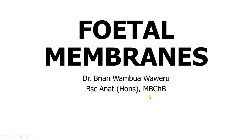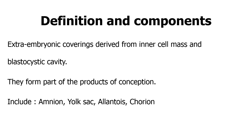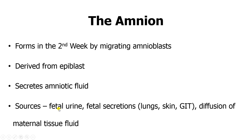Welcome back to my channel. Today we will be discussing the concept of fetal membranes, focusing on the amnion. The fetal membranes are extraembryonic coverings which come from the inner cell mass and the blastocyst cavity. They form part of the products of conception and there are four components: the amnion, the yolk sac, allantois, and the chorion. In this video we will discuss the amnion, and in subsequent videos we will talk about the other three.